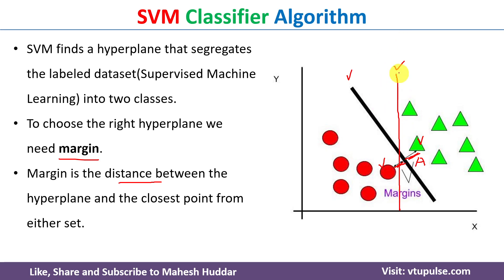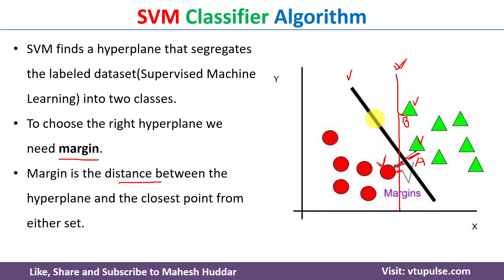Similarly, we calculate the margin for the second hyperplane, the one drawn in red color. This is the nearest data point on the green side and this is the nearest data point on the red side. We calculate the perpendicular distances — this is the margin for the red hyperplane, and we call this margin B. Now if you compare margins A and B, margin A is greater than margin B.